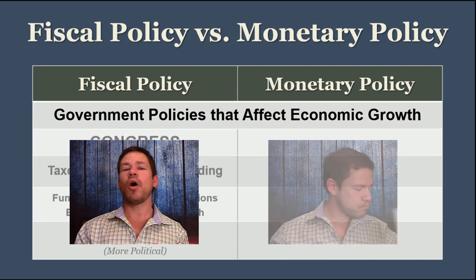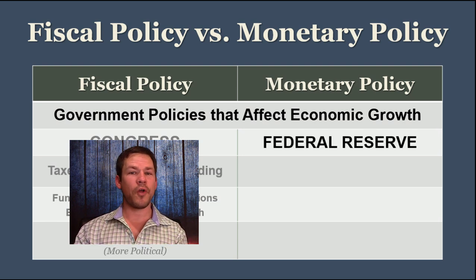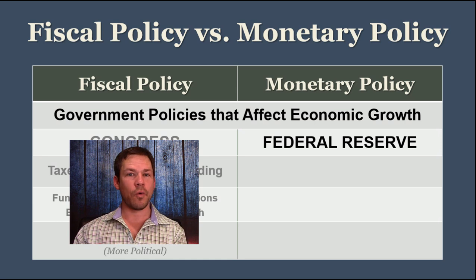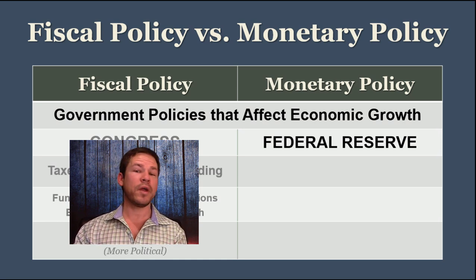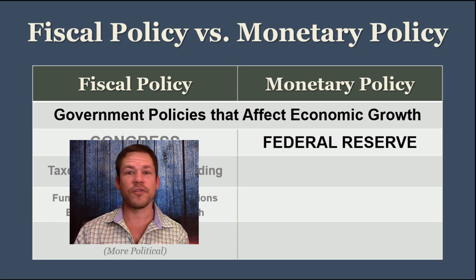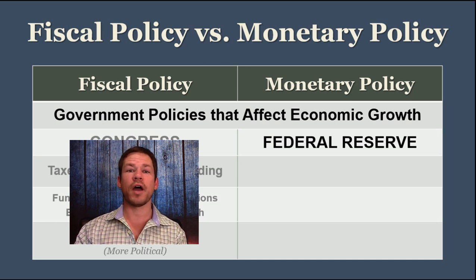Now on to monetary policy. Monetary policy is set by the Federal Reserve, which is an independent regulatory agency made up of a board of governors who are nominated by the president and confirmed by the Senate — much like the Supreme Court. The people on the board of governors get a 14-year term.